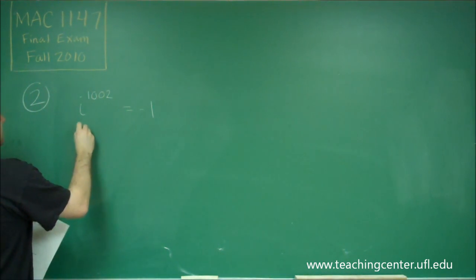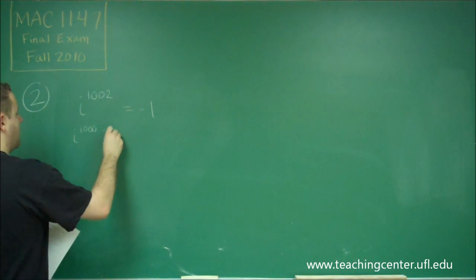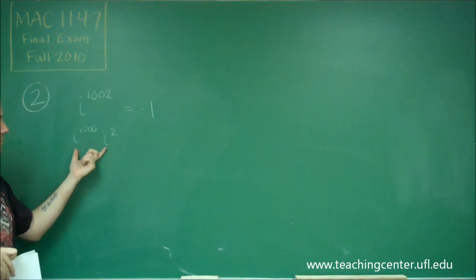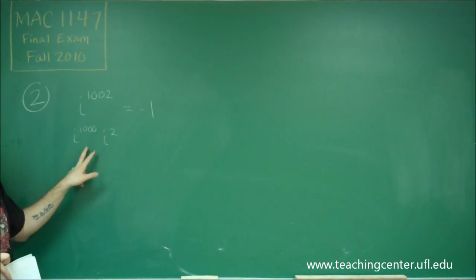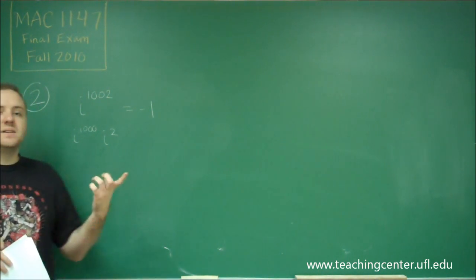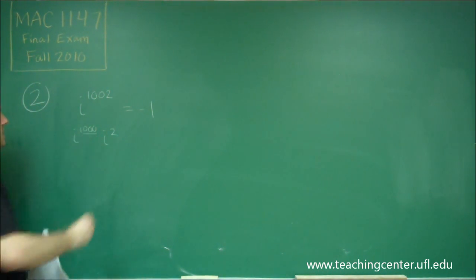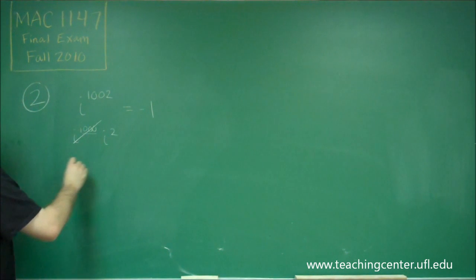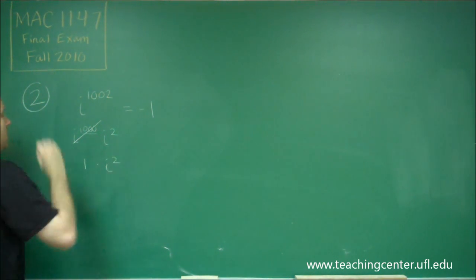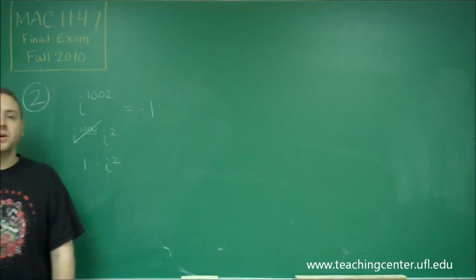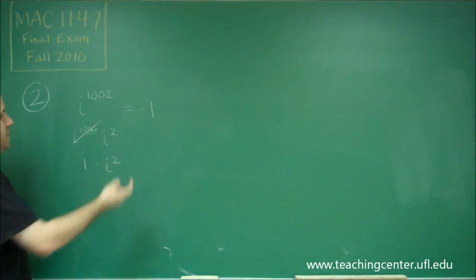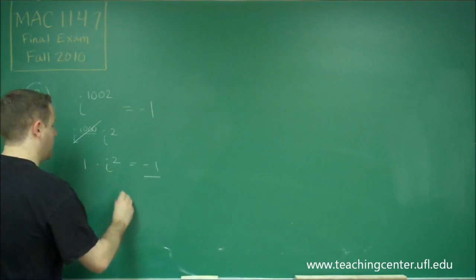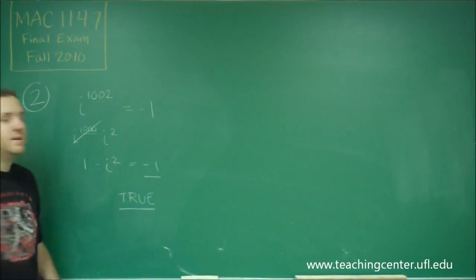What we can do is break this into i to the 1,000 times i squared. Because when you're multiplying two exponential terms, you add the powers, so this gives us i to the 1002. The reason I broke it down like that is because 1,000 is divisible by four, so i to the 1,000 is equal to one. Remember, i to any power that's a multiple of four equals one. So now all we have is one times i squared — in other words, just i squared — which is indeed equal to negative one. So this one is true.